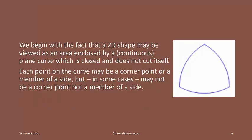We begin with the fact that a two-dimensional shape may be viewed as an area enclosed by a continuous plane curve which is closed and does not cut itself. Each point on the curve may be a corner point or a member of a side. But in some cases, it may not be a corner nor a member of a side.